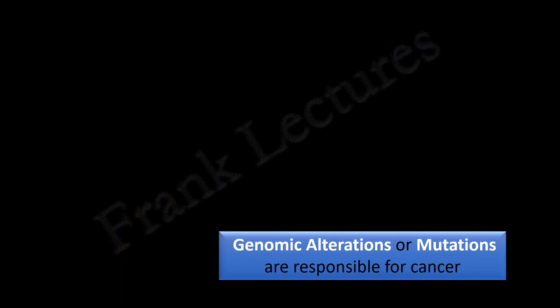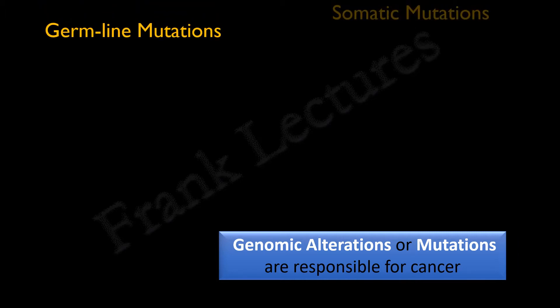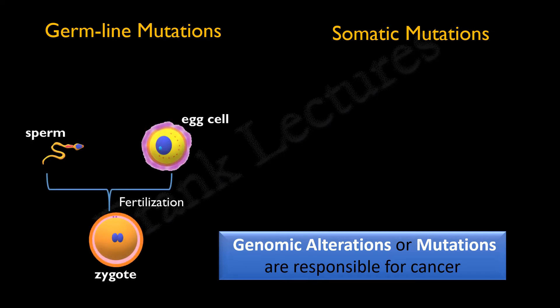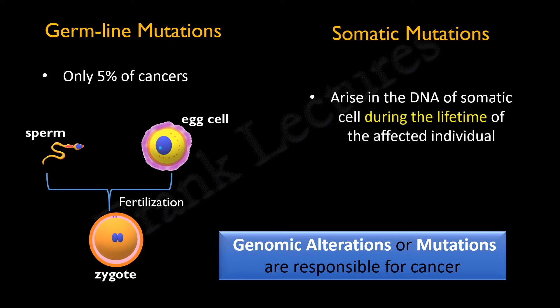We know that mutations are mainly of two types: germline mutations and mutations in somatic cells. Mutations in germline are transmitted to successive generations through gametes. In other words, the genetic defect is present in the chromosome of a parent and is transmitted to the zygote. So germline mutations are causes of inherited diseases. But only 5% of cancers are associated with germline mutations. The predominant underlying cause of cancer is somatic mutations, which are not transmitted to the next generation. These mutations arise in the DNA of somatic cells during the lifetime of the affected individual.